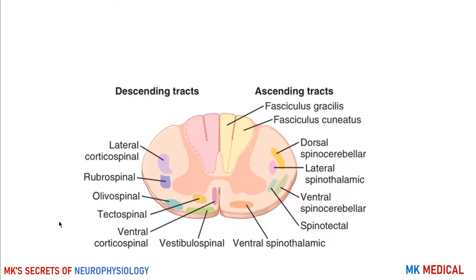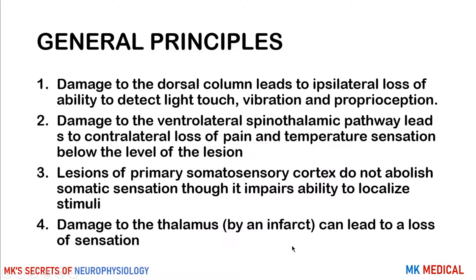Here is a schematic of the spinal cord — a cross-section of the different tracts. On one side you have the descending tracts, which are motor. On the other side you have the ascending tracts: the fasciculus gracilis, fasciculus cuneatus, and other spinal tracts like the dorsal spinocerebellar, lateral spinothalamic, ventral spinocerebellar, spinotectal, as well as the ventral spinothalamic.